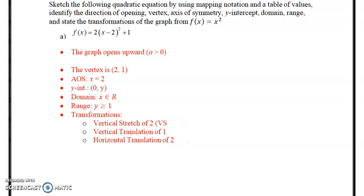And you can also say VS = 2, or VS up to. You can say VT = 1. And this is for short, right? You can say HT = 2. So these are all your transformations.